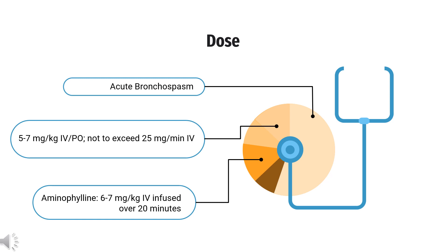Co-administration with drugs that decrease theophylline clearance, e.g., cimetidine, ciprofloxacin, and erythromycin and other macrolides: 0.2–0.3 mg/kg/hr IV or PO extended release Q12–24HR. For congestive heart failure: 0.39 mg/kg/hr for the next 12 hours after loading dose, then 0.08–0.16 mg/kg/hr.